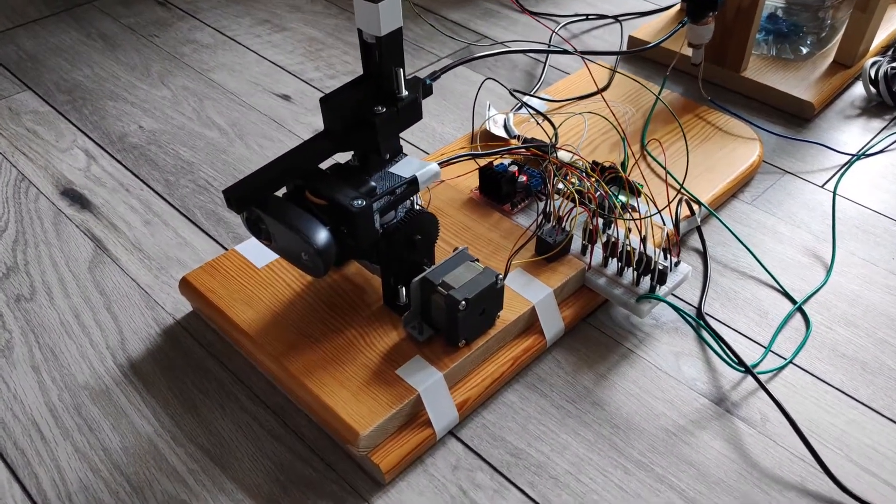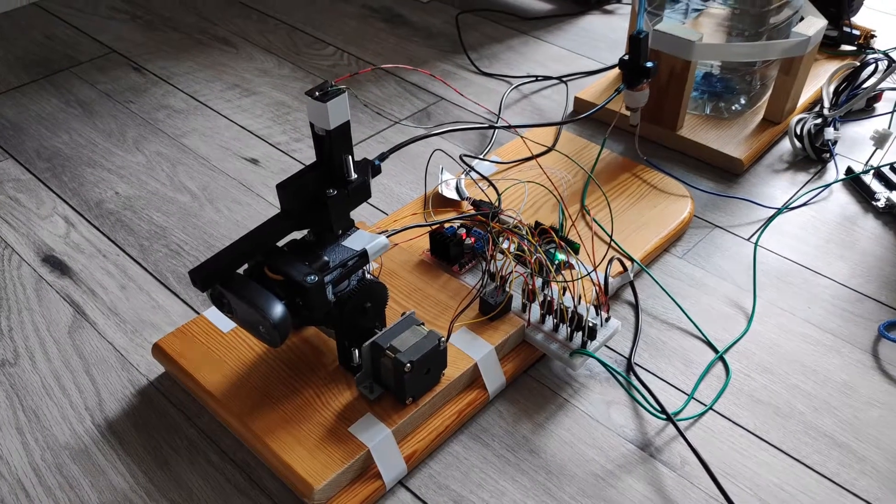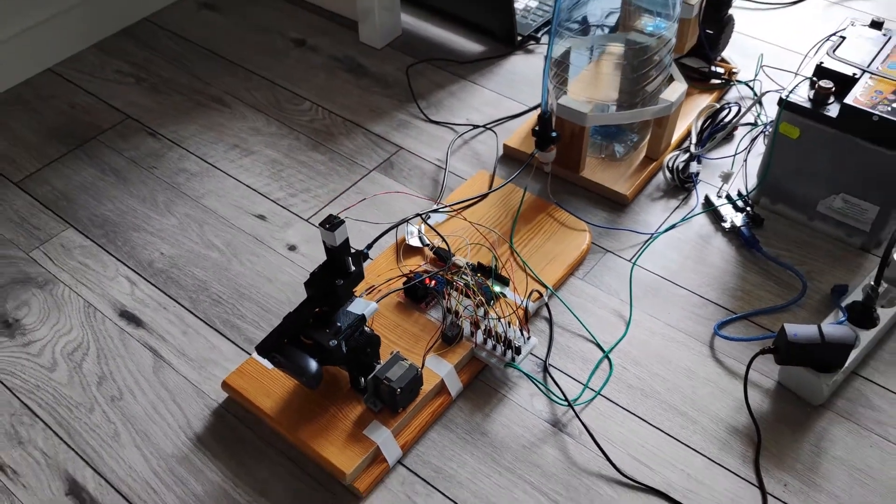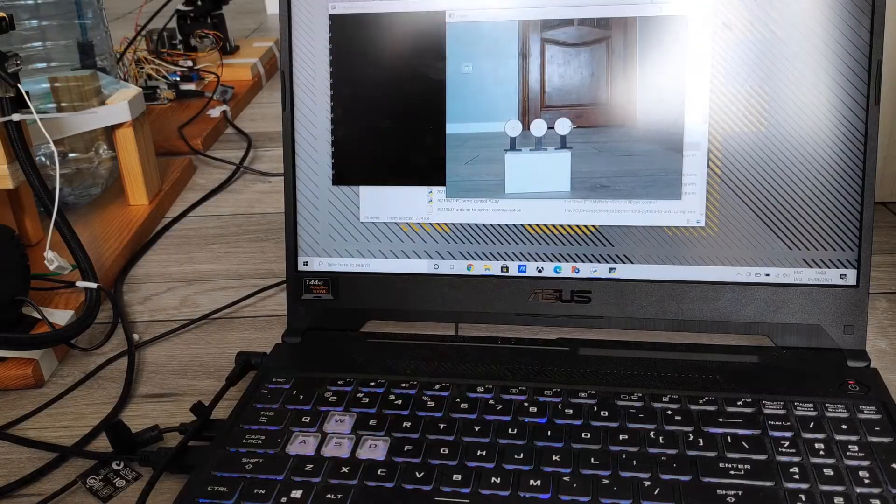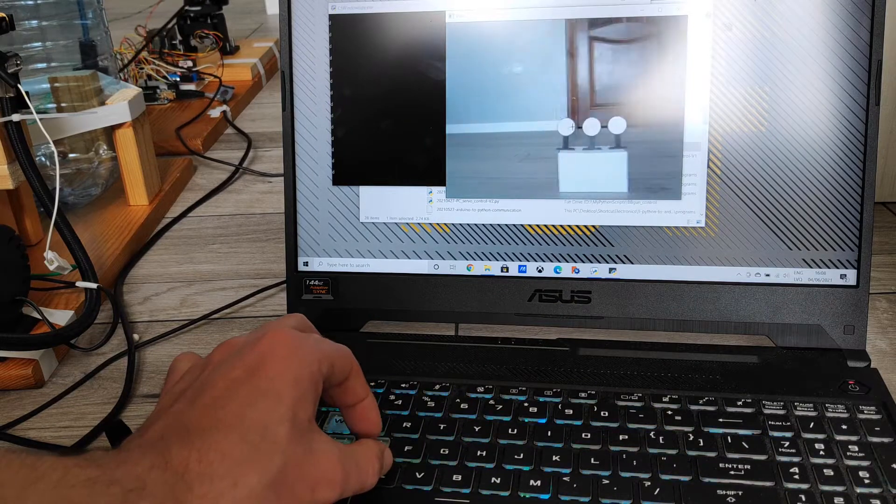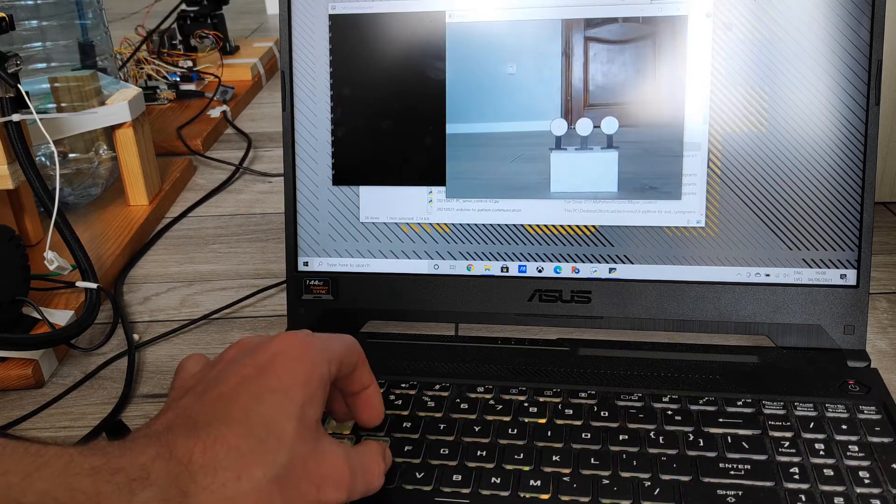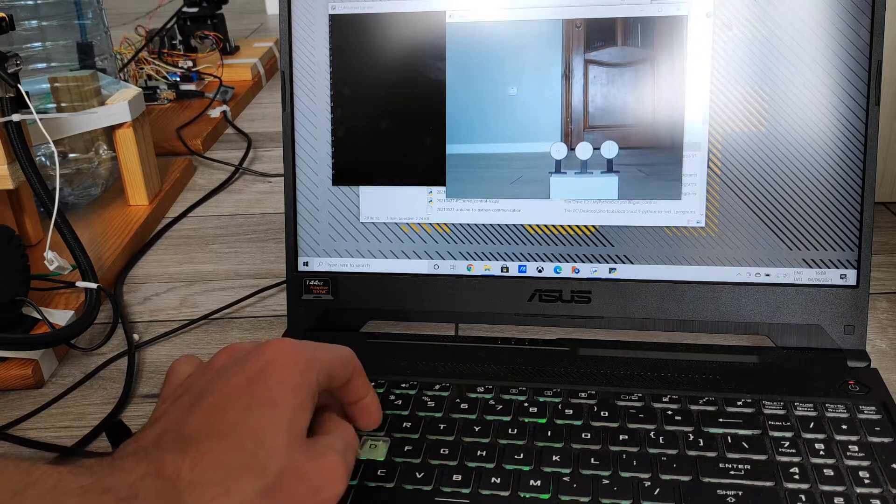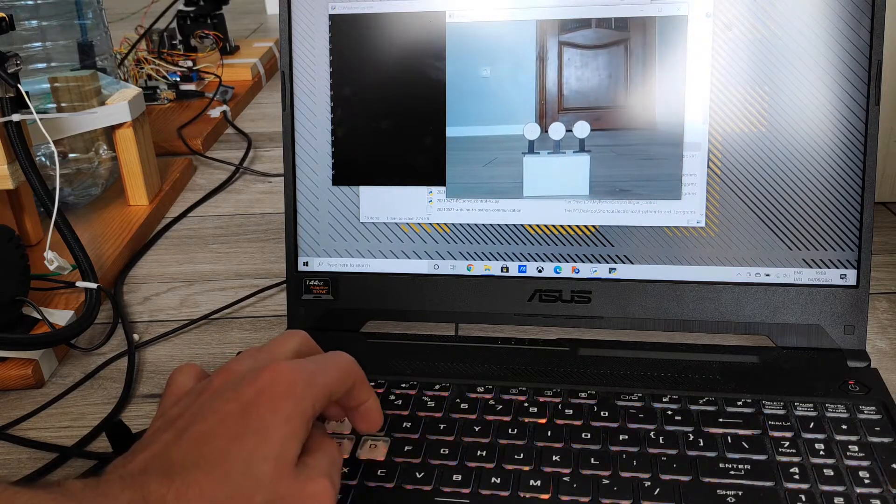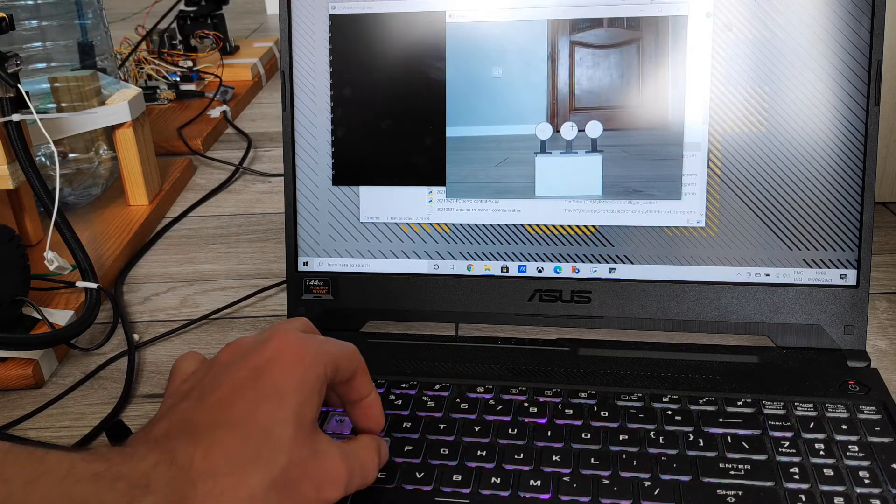You can control the BB gun using your keyboard in the same way as if you would be playing a video game. You can control its direction using the A, D, W and S keys and if you are holding down the C key at the same time that increases the speed at which the BB gun is moving.